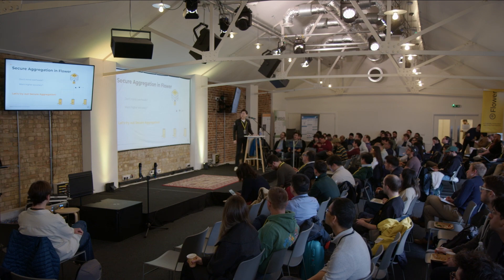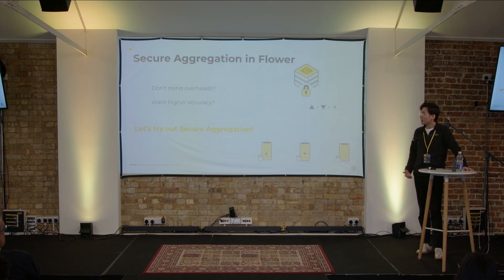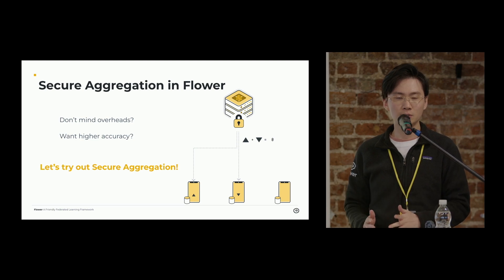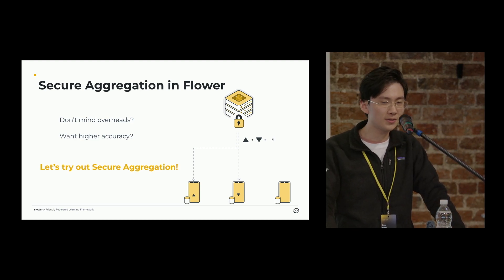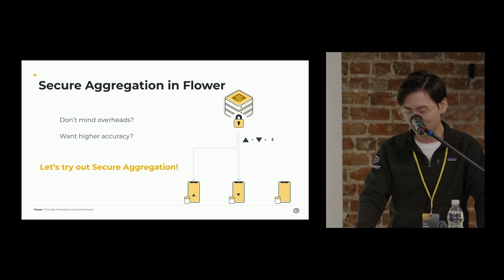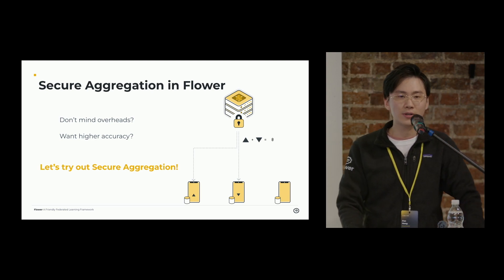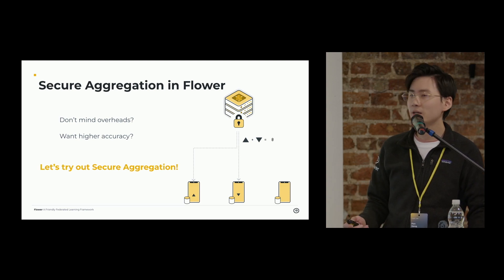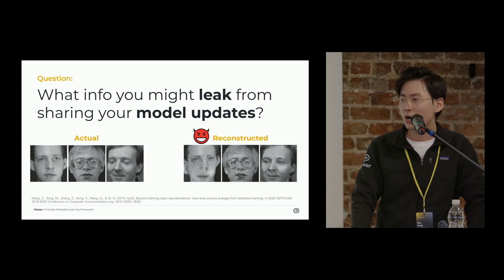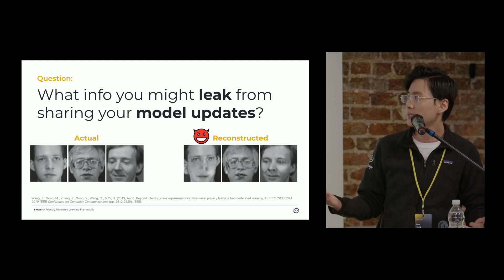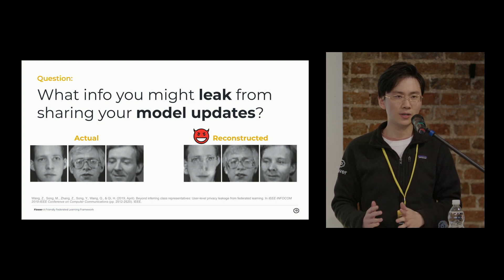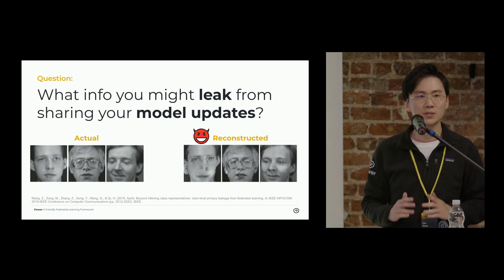Differential privacy is a nice and decent technique to protect privacy. However, in reality, if you add noise to the model parameters, it will inevitably impact the final performance. So if you're aiming for higher accuracy and don't mind some slight overhead, then SecAgg aggregation is for you. We are very happy to announce that SecAgg aggregation is now officially supported in Flower. SecAgg aggregation is designed to hide individual model updates from the server so that a curious server cannot infer anything from the individual client updates.